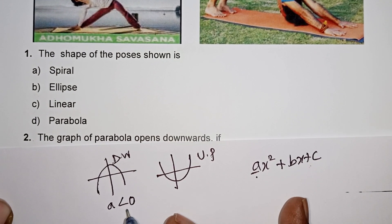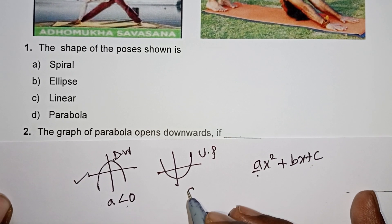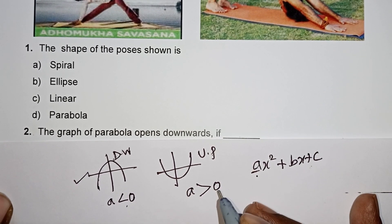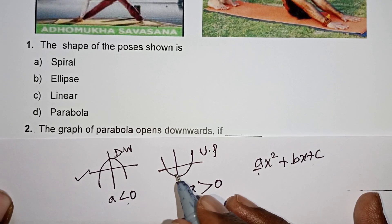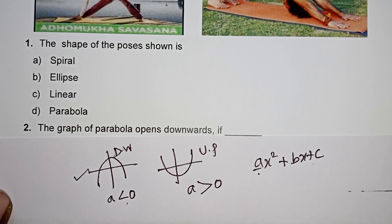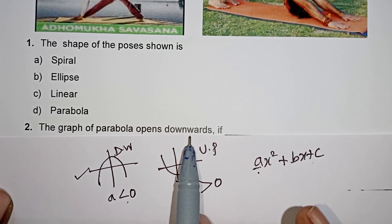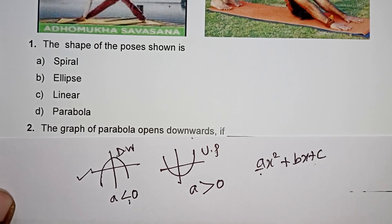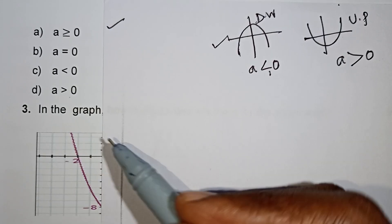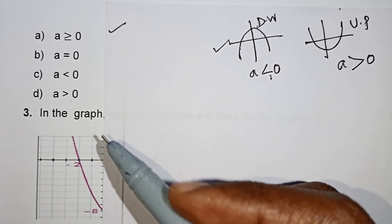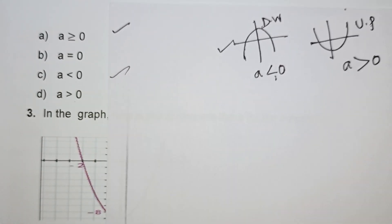Here is the second detail. The parabola opens downwards, so a is less than 0. If a is positive, the parabola opens upwards. If a is less than 0, it opens downwards. So the correct answer is the third option.